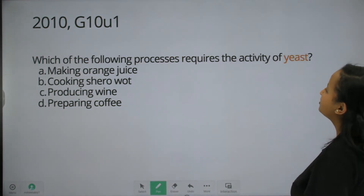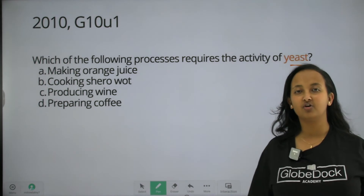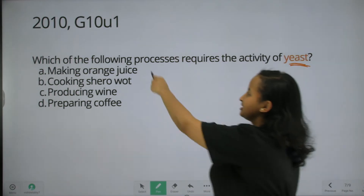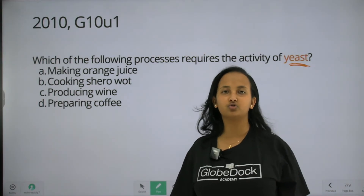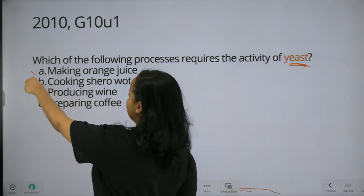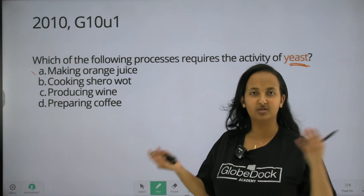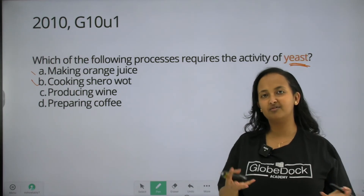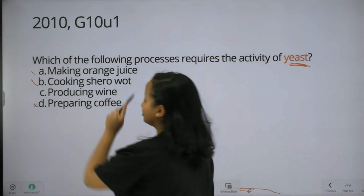Which of the following processes requires the activity of yeast? The key word is yeast — yeast is involved in fermentation reactions. Making orange juice: orange juice is a fermentation reaction. Cooking shiruvat: shiruvat is a fermentation reaction. Preparing coffee. Producing wine — wine production involves yeast fermentation.